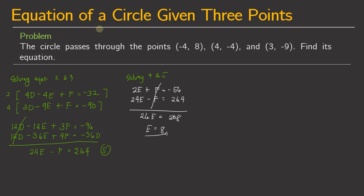To solve for f, we choose equation 4: 2e plus f equals negative 56. Substituting e equals 8, we get 2 times 8 plus f equals negative 56. Therefore, f equals negative 56 minus 16, which gives f equals negative 72. So we now have both e and f.